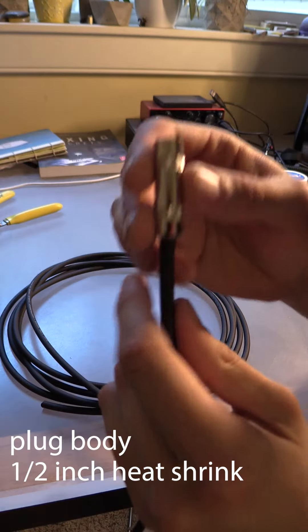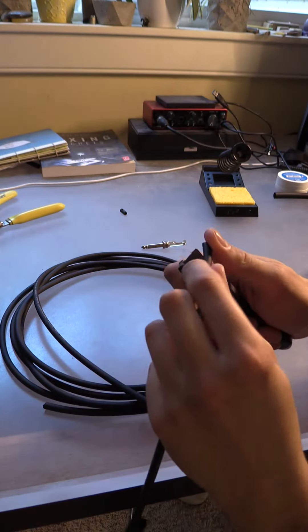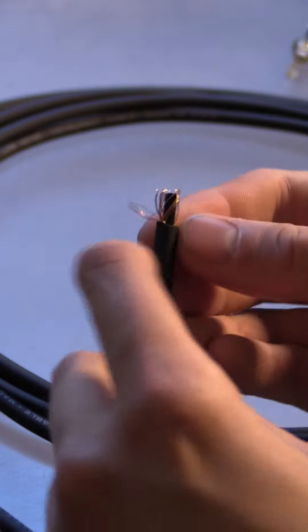So cut to the desired length and put on the heat shrinks and plug pieces in this order. Next strip that cable and then twist the ground wire off to one side.